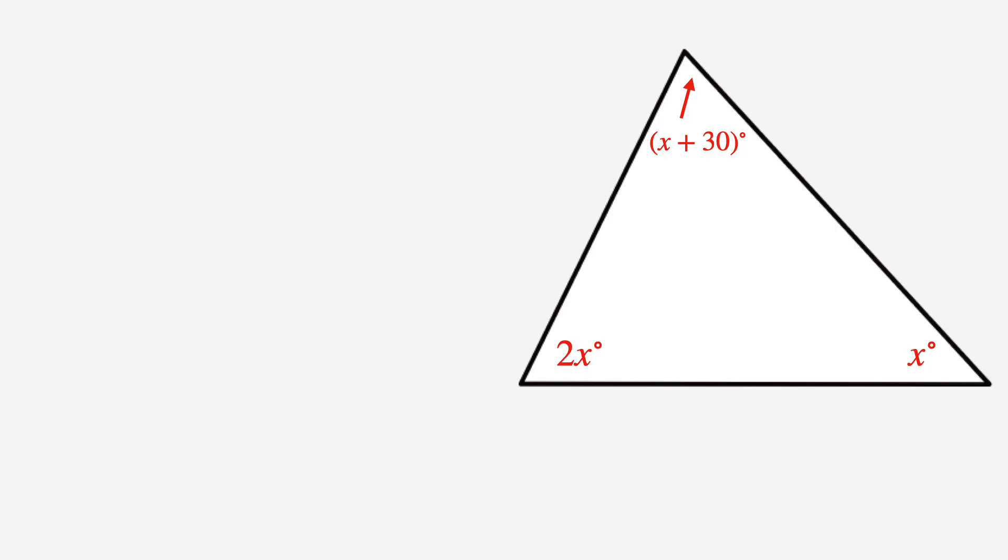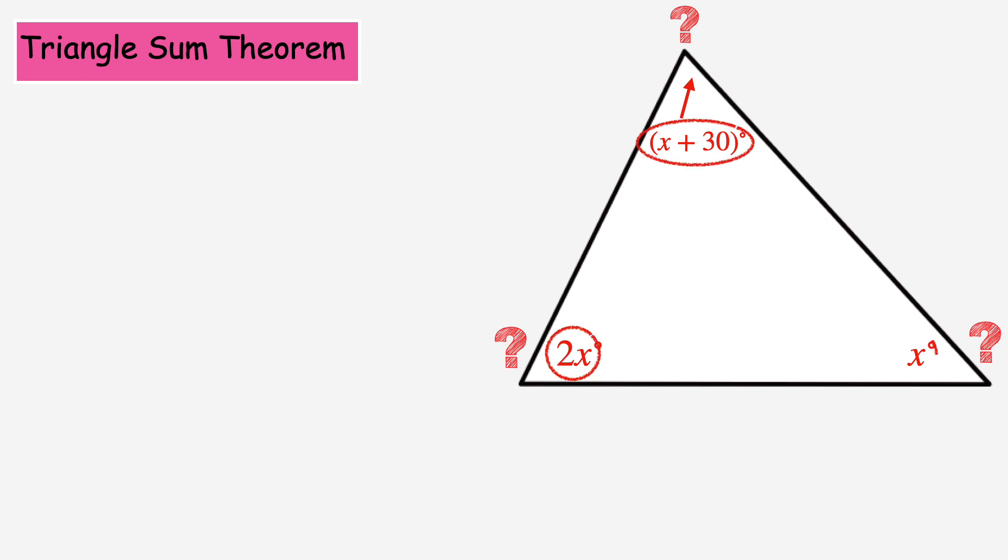Now this triangle is missing the precise measurements for all three of its angles. But we can use the triangle sum theorem again to find all three. Remember, this theorem tells us that all three angles added together must equal 180 degrees. So starting at the lower left angle, we'll add 2x and then x plus 30 and then x to equal 180.